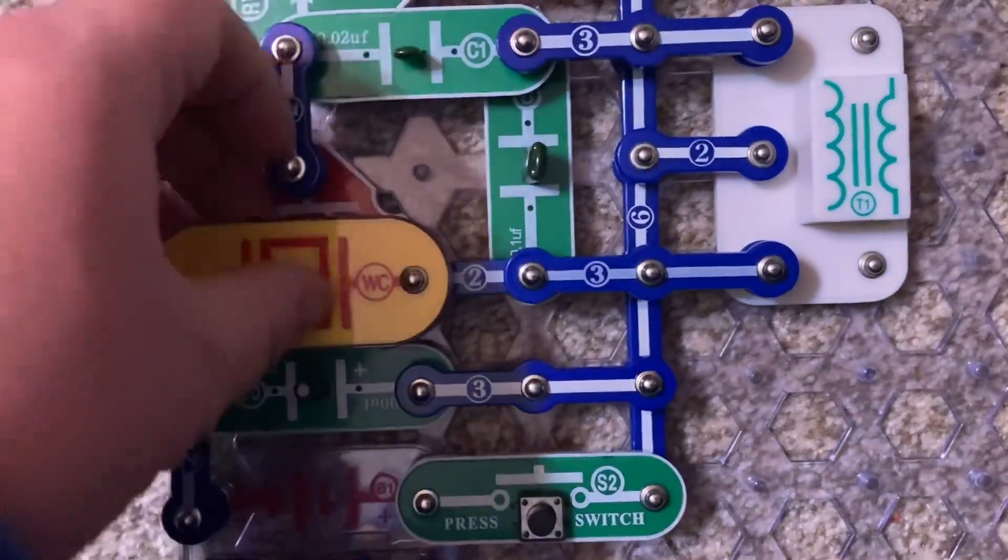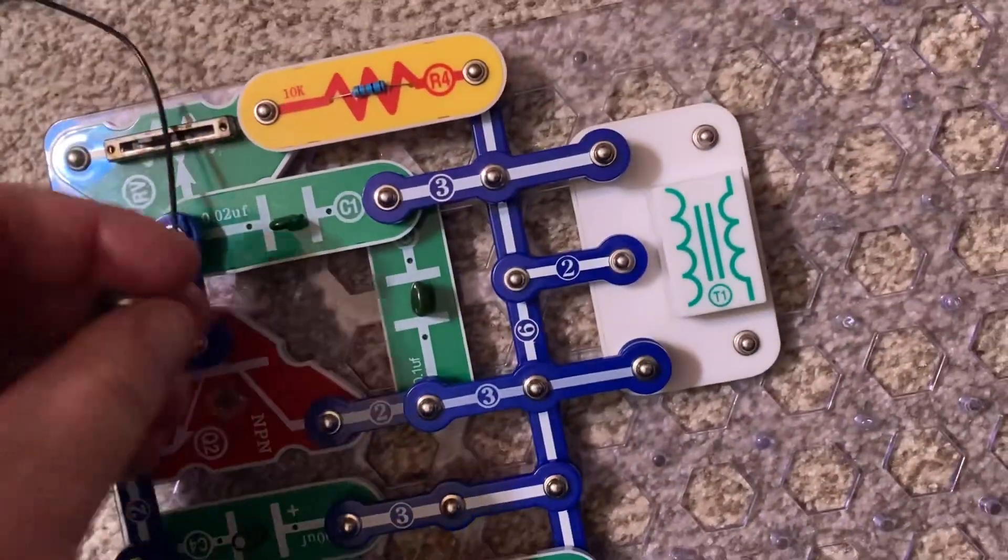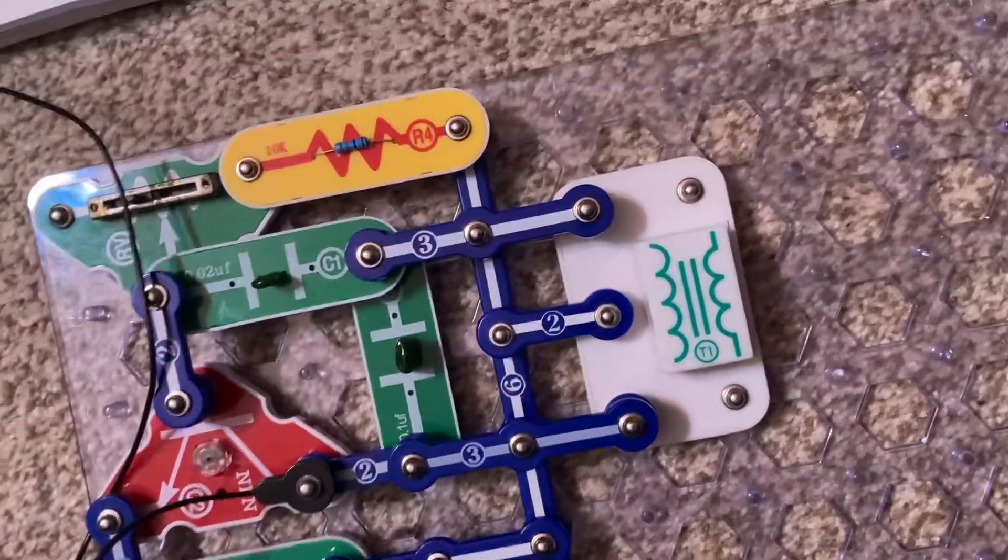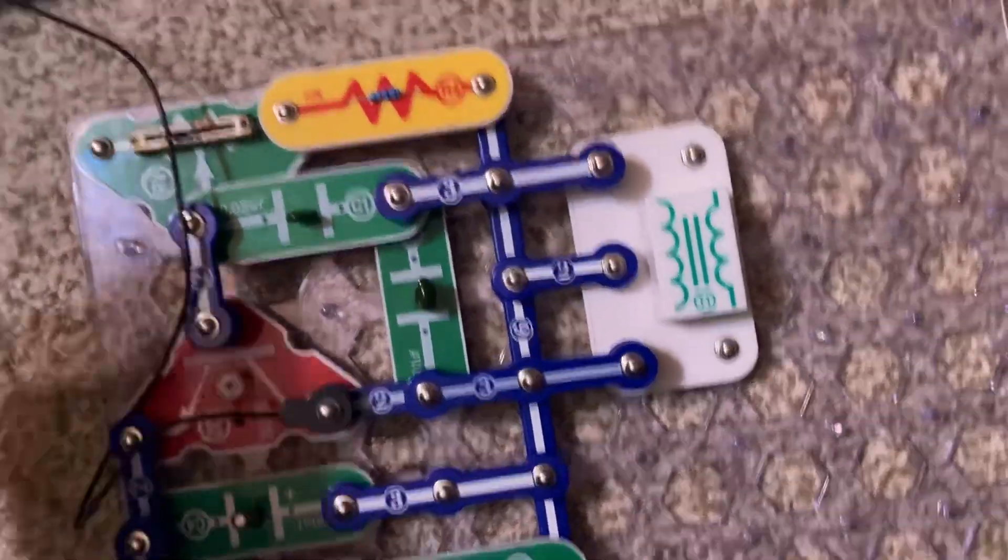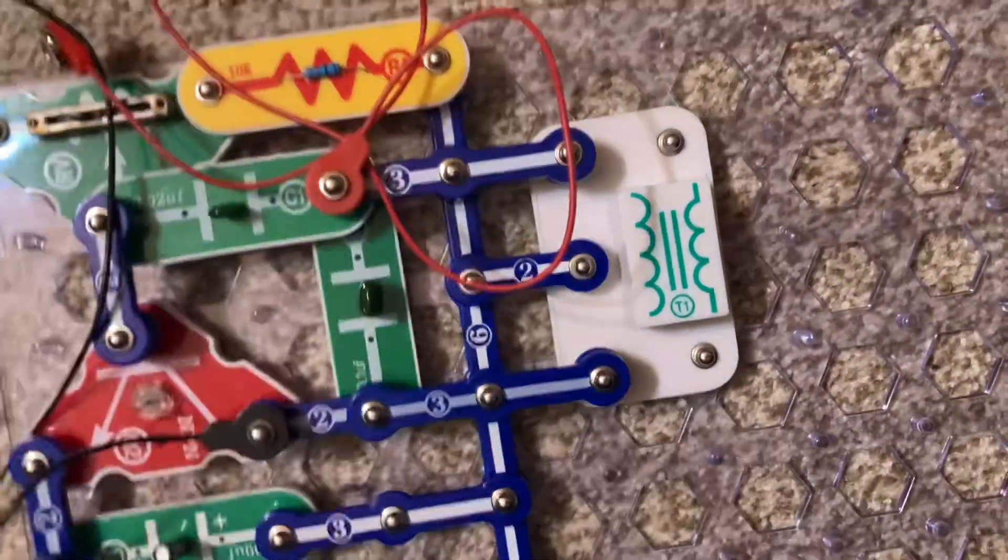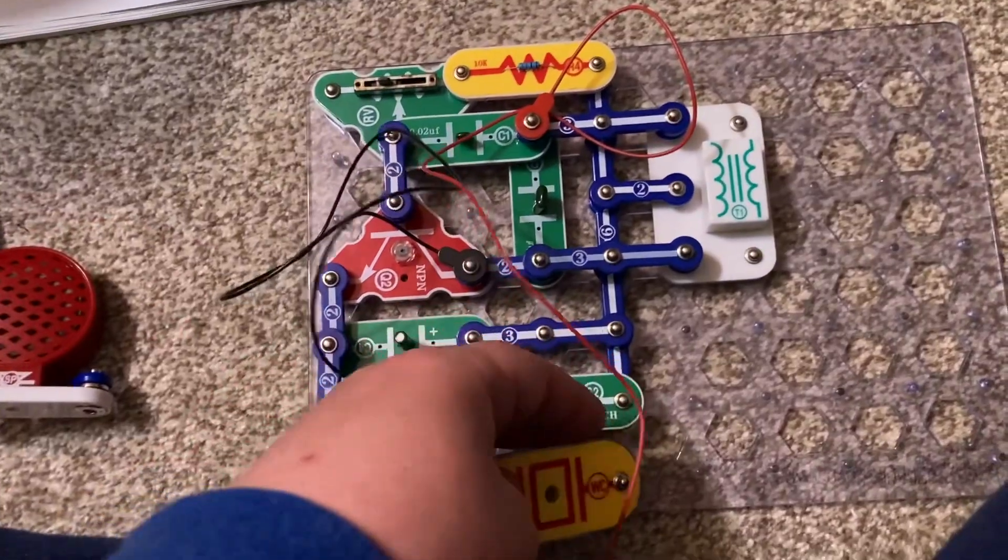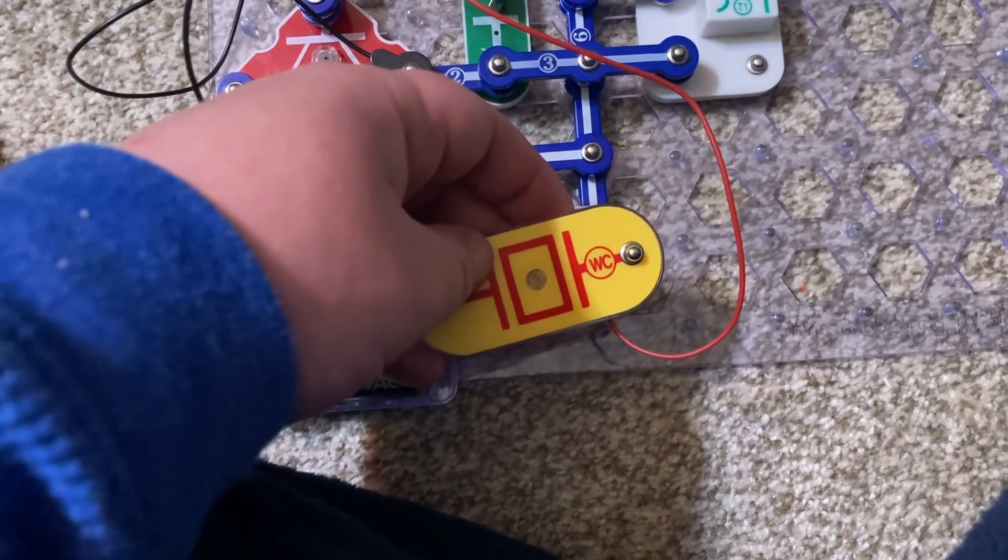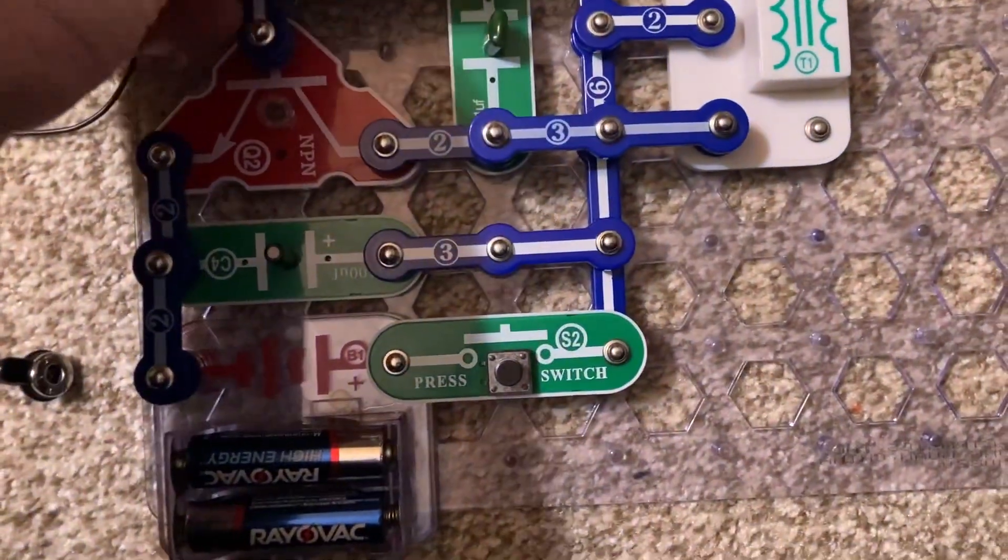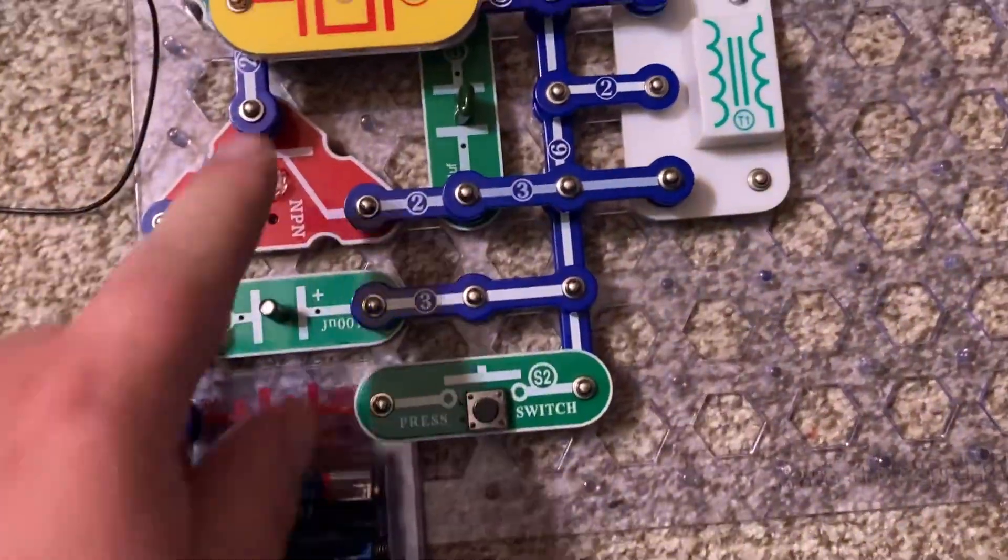Now I am going to use the jumper wires again to connect the whistle chip between these two points. Now I'm going to place the whistle chip back along on these two points.